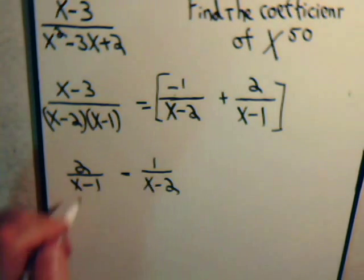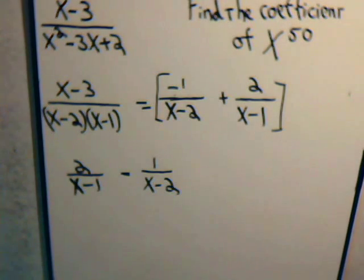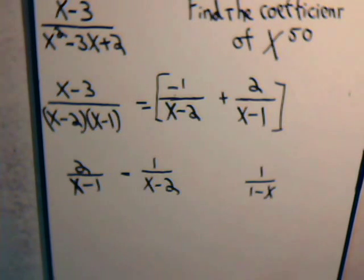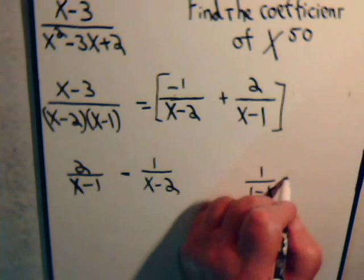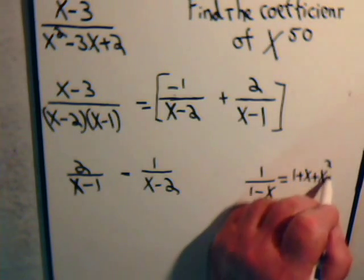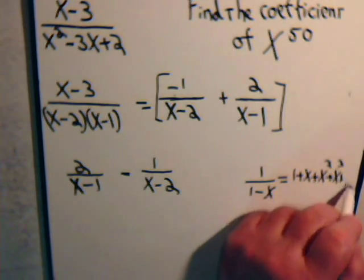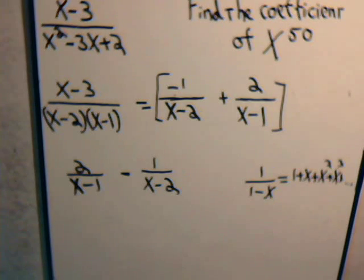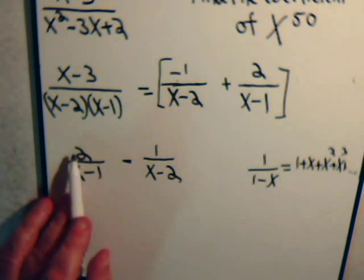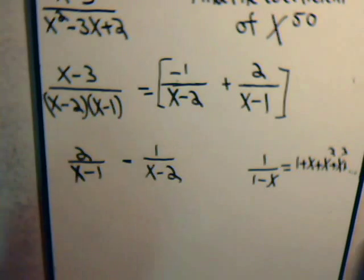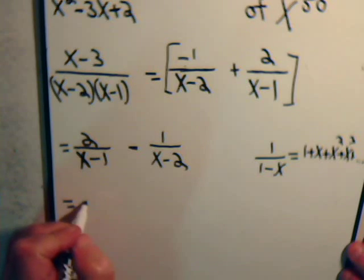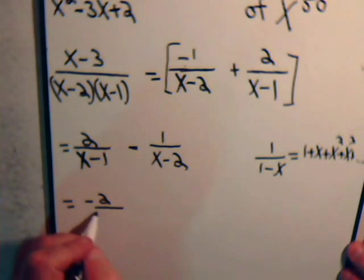So let's see, we have here 2 over x minus 1, and then we have minus 1 over x minus 2. Now in the previous videos, we were working a lot with the expression of 1 over 1 minus x. You know what that is, that's that infinite series, 1 plus x plus x squared plus x cubed all the way on out to infinity. So we can get this in that form there by having minus 2 over 1 minus x.